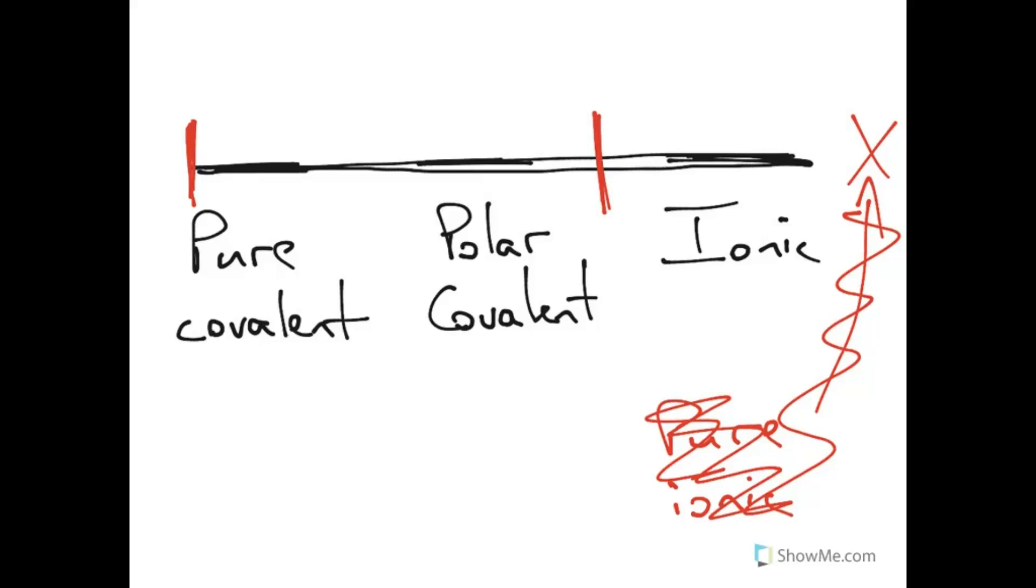The magic number to remember here is 1.67. What we're talking about is the difference in electronegativity. A difference of electronegativity between the two atoms of less than 1.67, you would have a polar covalent bond. If you look at the electronegativity of the two atoms, and the difference between them is more than 1.67, now you're talking about an ionic bond.